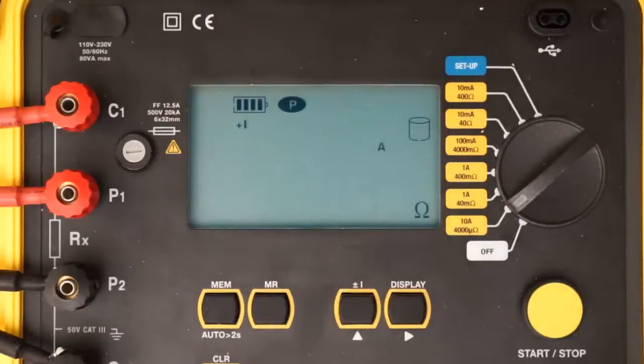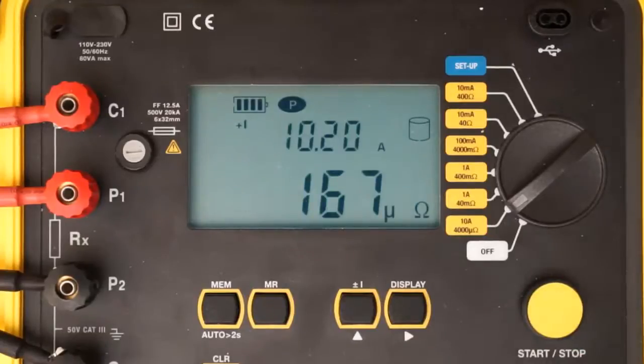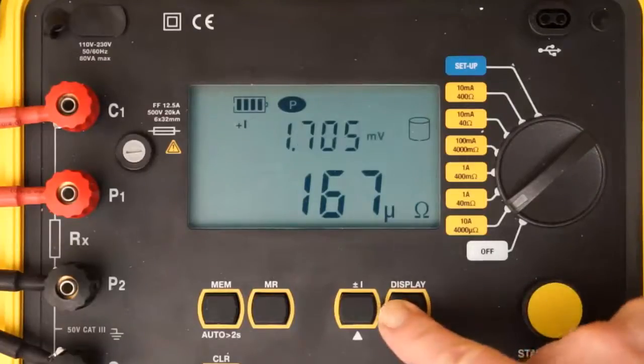To begin the test, press the start-stop button once. After a moment, the resistance and current measurements appear in the LCD. As you can see, current is slightly over 10 amps, and resistance is approximately 167 micro-ohms. Note that you can also display the test voltage by pressing the display button. In our example, test voltage is approximately 1.7 millivolts.